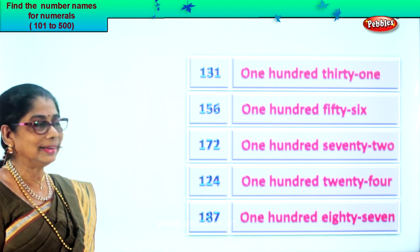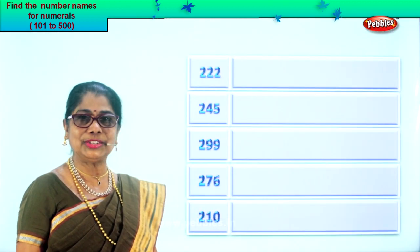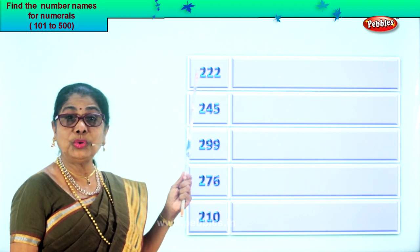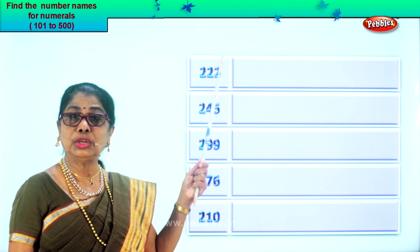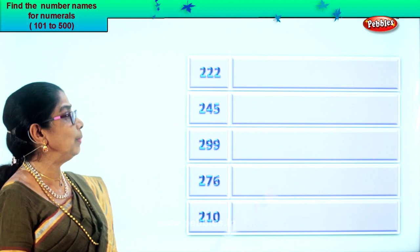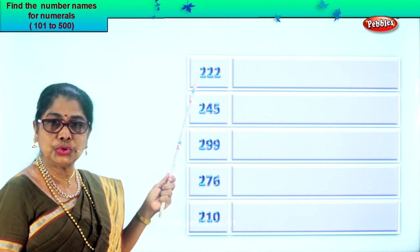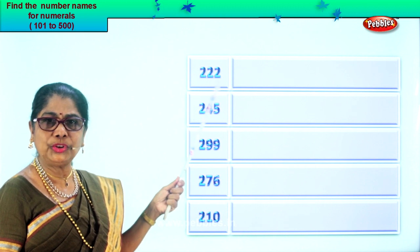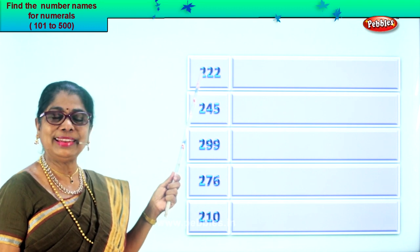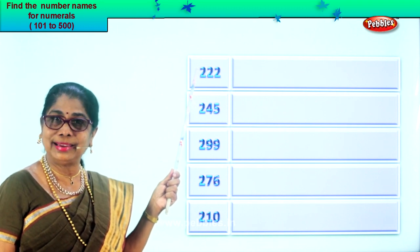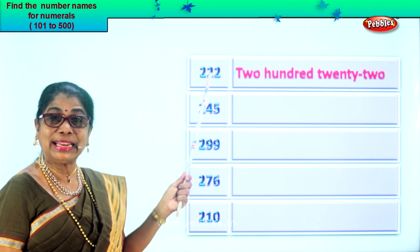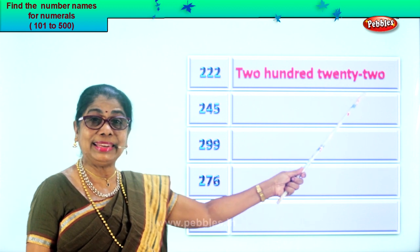Did you enjoy the exercise? Let's get on to another exercise. Look at the numerals, let's read one by one. You have here two, two, two — two in the ones place, two in the tens place, two in the hundreds place. So how do we read this? Two hundred twenty-two. So first we write down two hundred, next twenty-two.